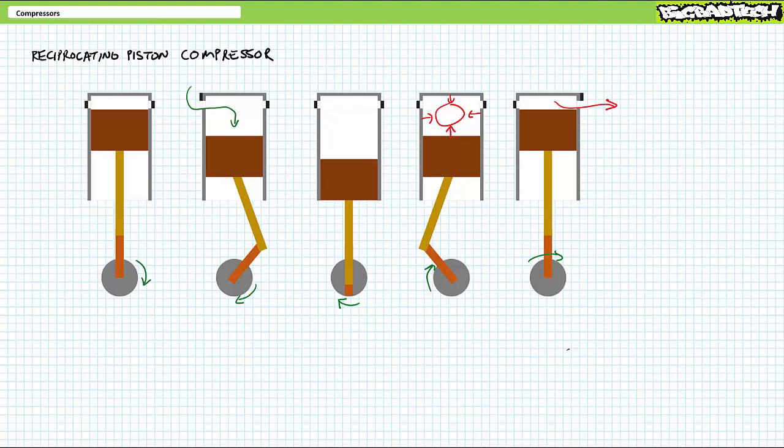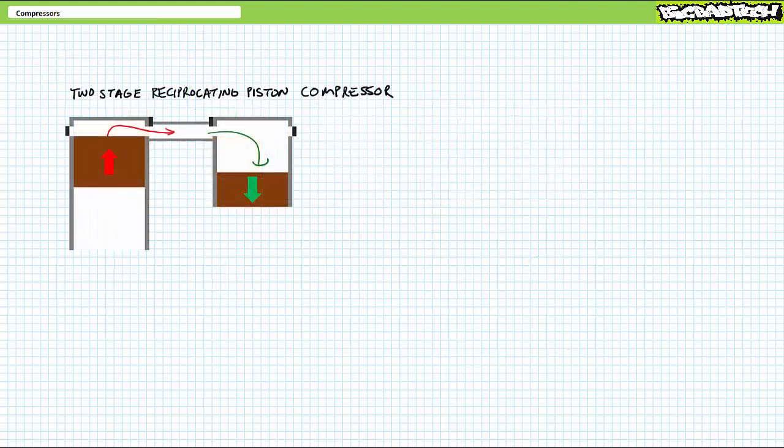What I've described is the operation of a single-stage reciprocating piston-style compressor. While single-stage compressors do exist, it's often more efficient to perform compression using more than one stage. Consider a two-stage reciprocating piston-style compressor driven by the same shaft. While the primary cylinder is in the compression stage with an open outlet, the secondary cylinder is in the suction phase with an open inlet. Previously compressed air from the primary cylinder is drawn into the secondary.